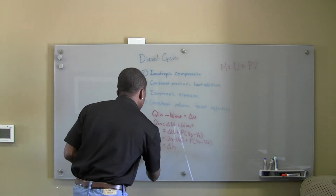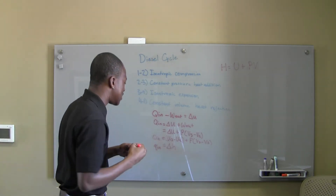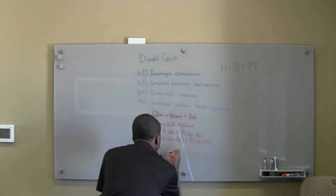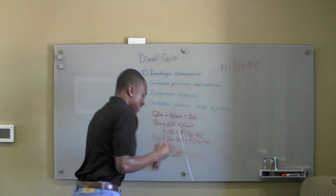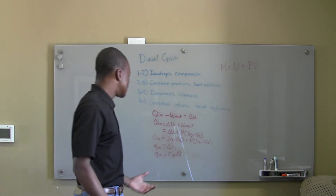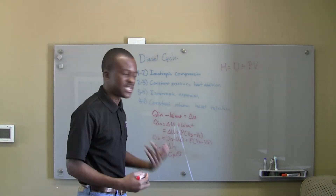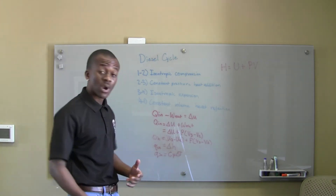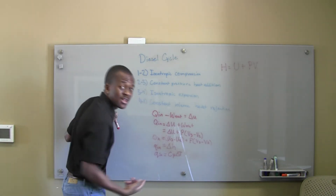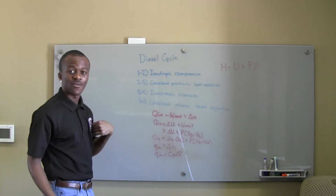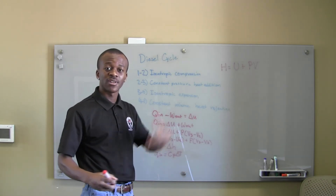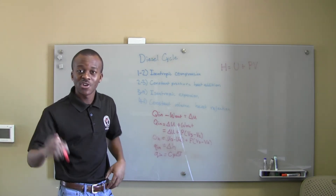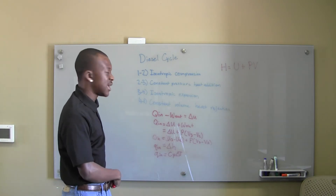So Q in equals delta H. If they're asking you to calculate Q in, you can also call that CP·delta T, specifically CP(T3 minus T2). To remember this: CP equals constant pressure. When we were calculating Q in and Q out in the Otto cycle for constant volume processes, it was CV·delta T — that's how I differentiate between the two.